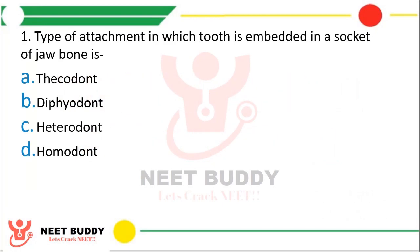Question number 1. Type of attachment in which tooth is embedded in a socket of jawbone is: a. Thecodont, b. Diphyodont, c. Heterodont, or d. Homodont. The correct answer is option a, Thecodont.